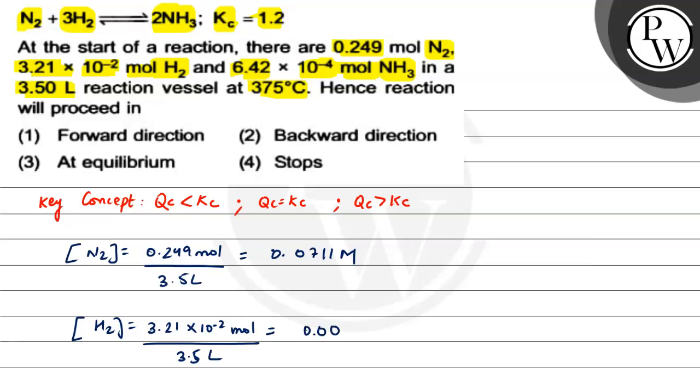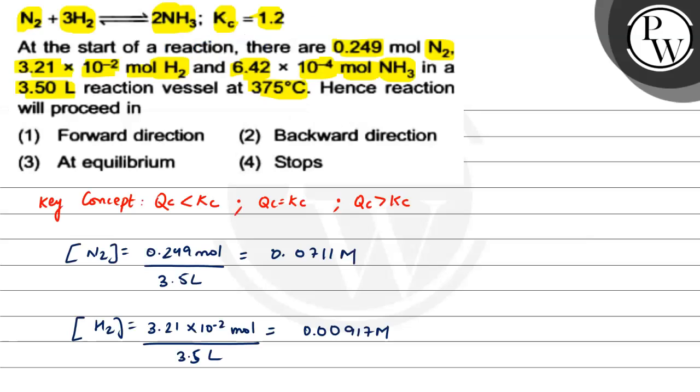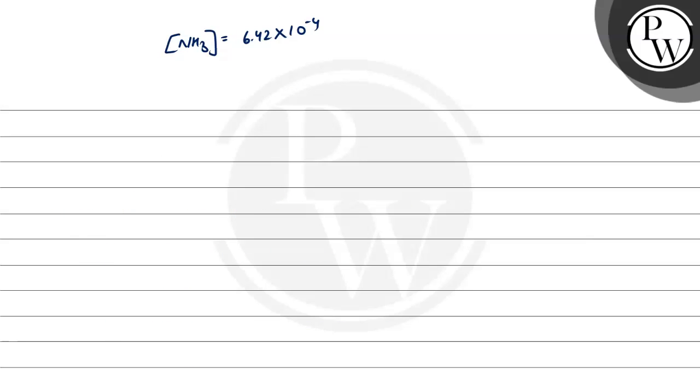...0.00917 molar. Next is the concentration for NH3. NH3 is 6.42 × 10^-4 moles divided by 3.5 liters, which equals 0.000183 molar.